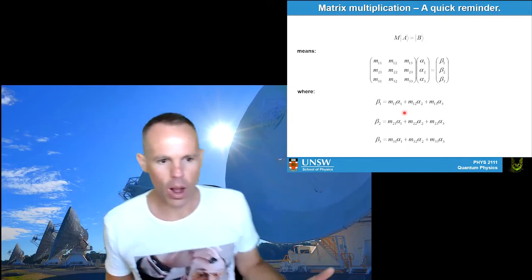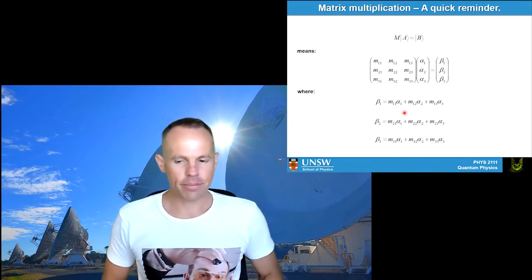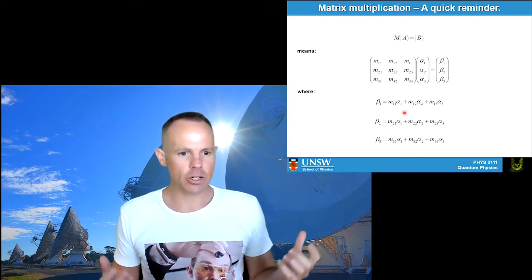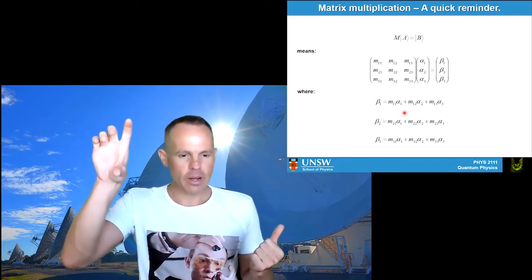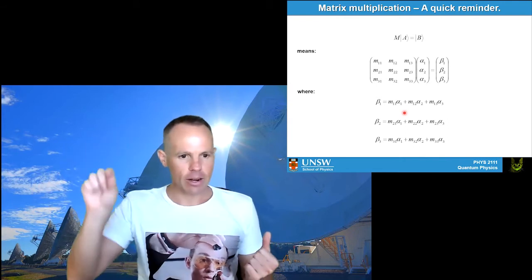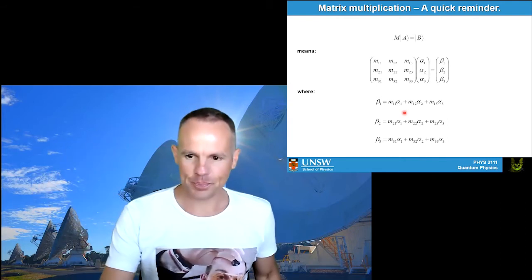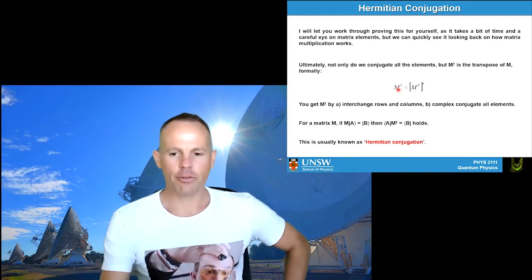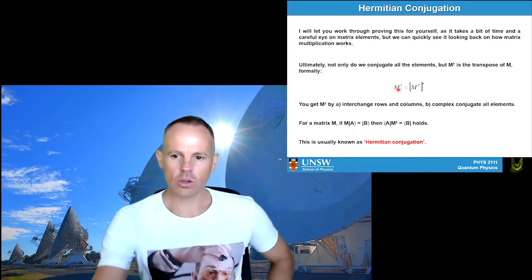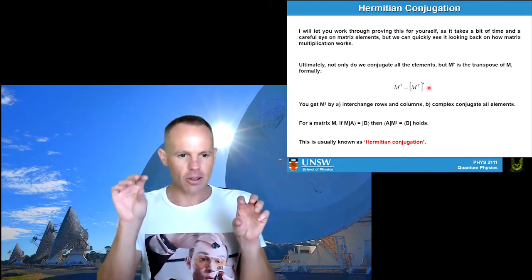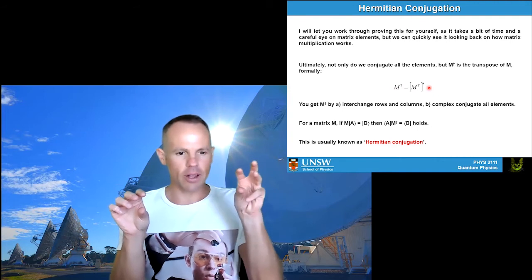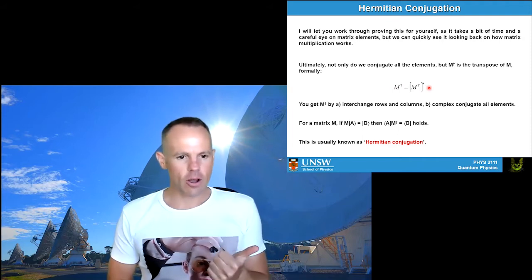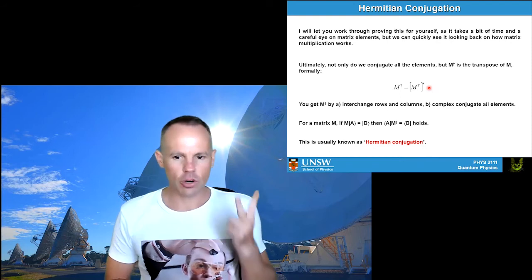You can think of a vector as a one-by-N matrix and a scalar as a one-by-one matrix — in quantum mechanics, everything is a matrix. And as a general rule throughout quantum mechanics, whether it's scalars, vectors, or matrices, if you're going from the ket side to the bra side, you're taking the transpose and the complex conjugate of all the elements. So always remember: to get the conjugate of a matrix, interchange the rows and columns and take the complex conjugate of all the elements.